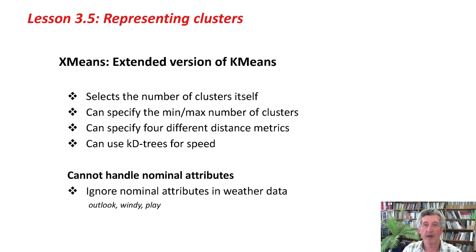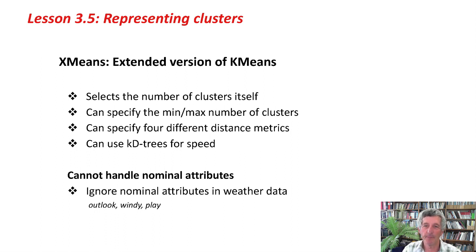X-Means, also in Weka, is an extended version of K-Means. It selects the number of clusters itself, whereas with K-Means you have to specify that. For X-Means, you can specify a minimum and a maximum for the number of clusters. It uses KD trees, a sophisticated data structure, to make it operate quickly. Unfortunately, X-Means cannot handle nominal attributes.